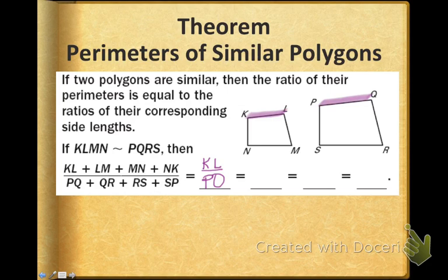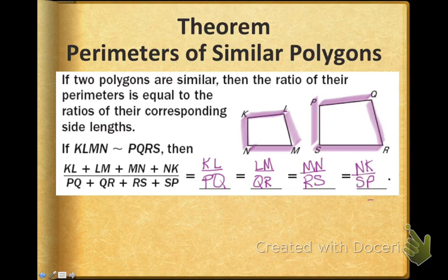So if I have that the perimeter of polygon KLMN is similar to polygon PQRS, then I know that the perimeter is in the same proportion or equal to the ratio of any two side lines: KL to PQ, LM to QR, MN to RS, or NK to SP.